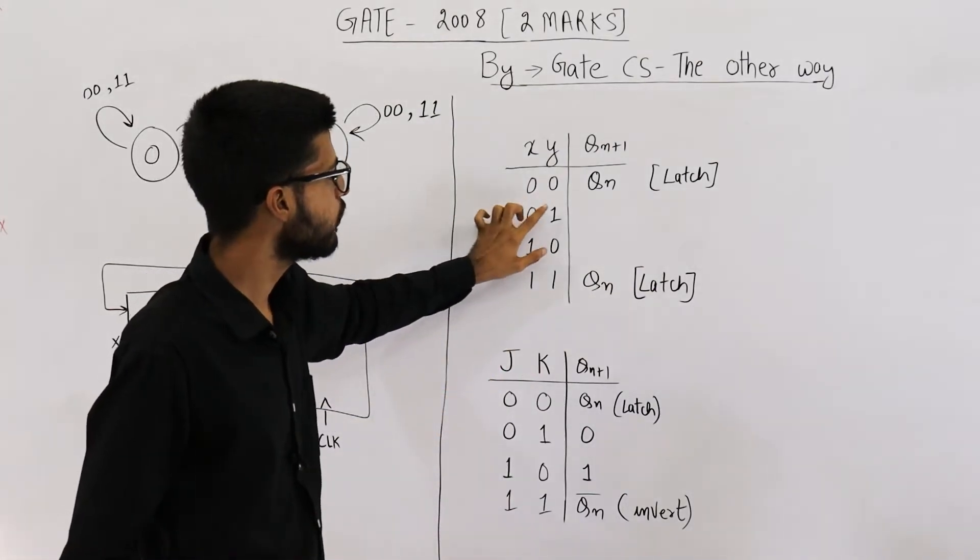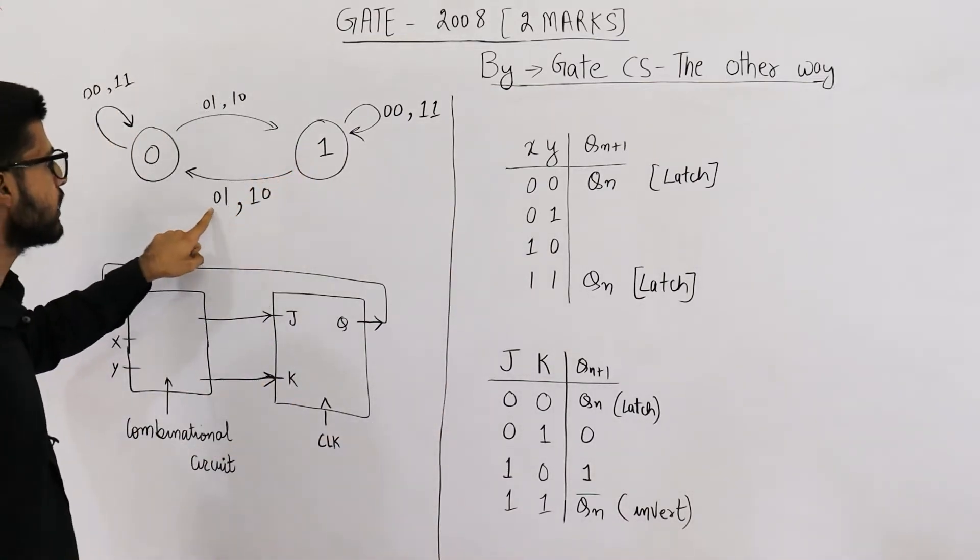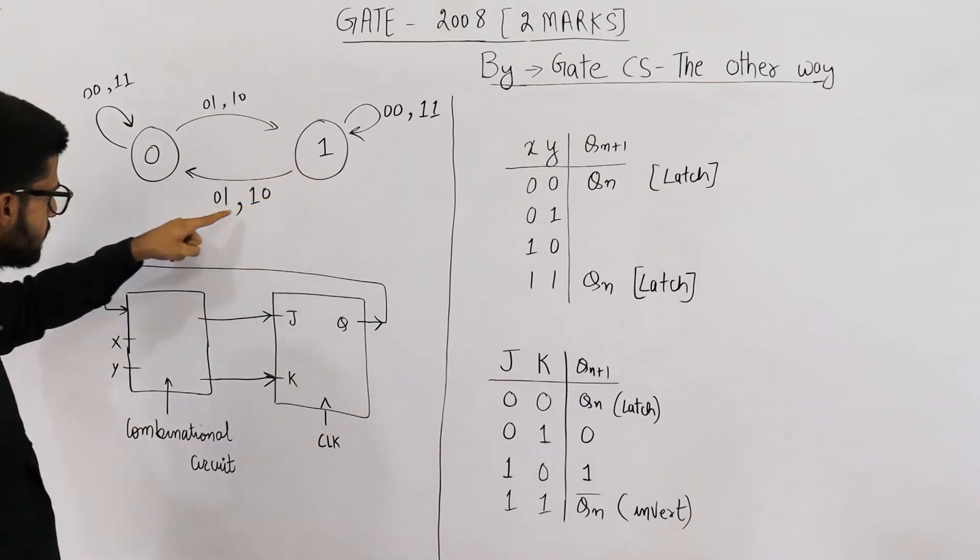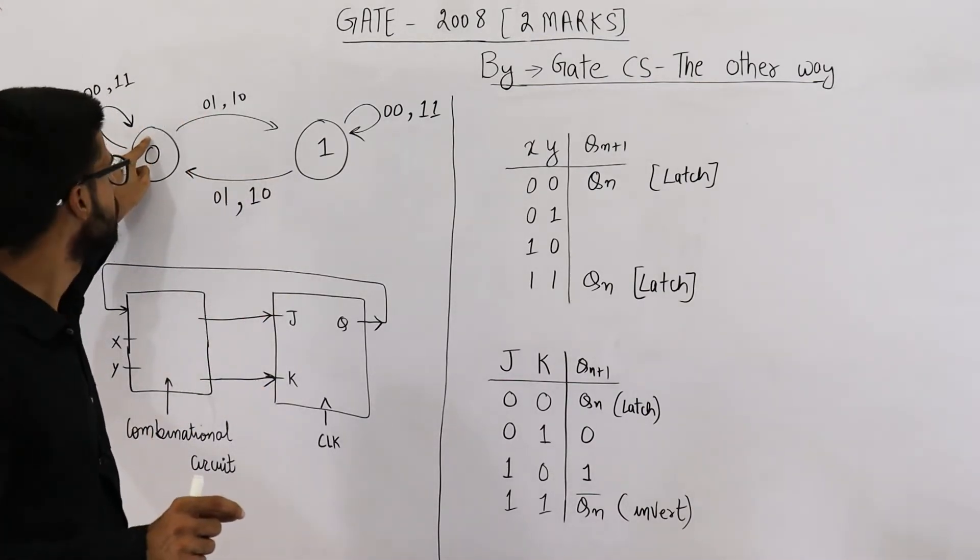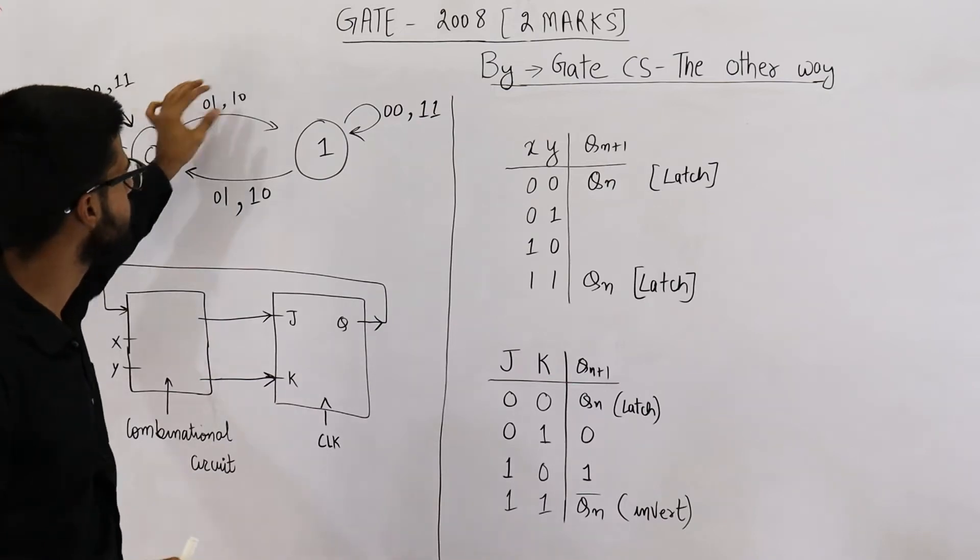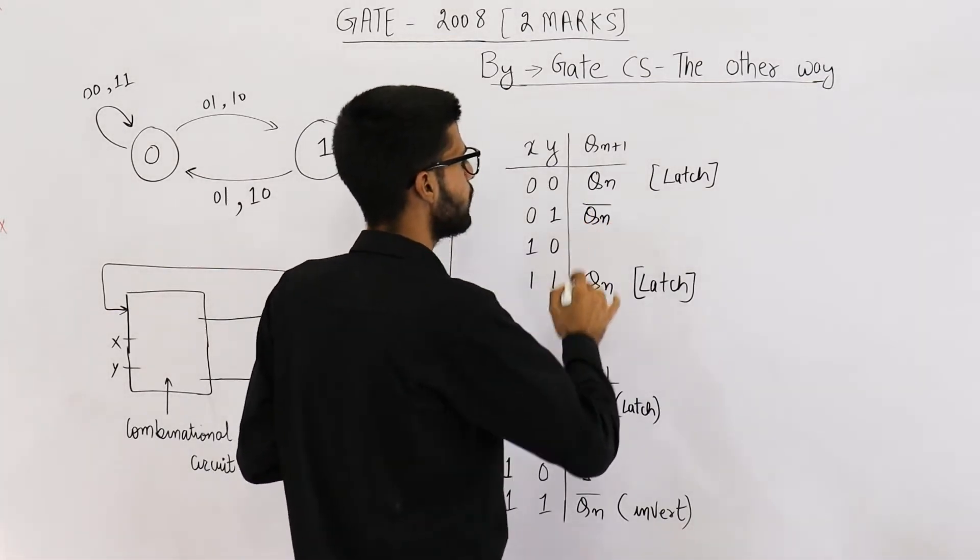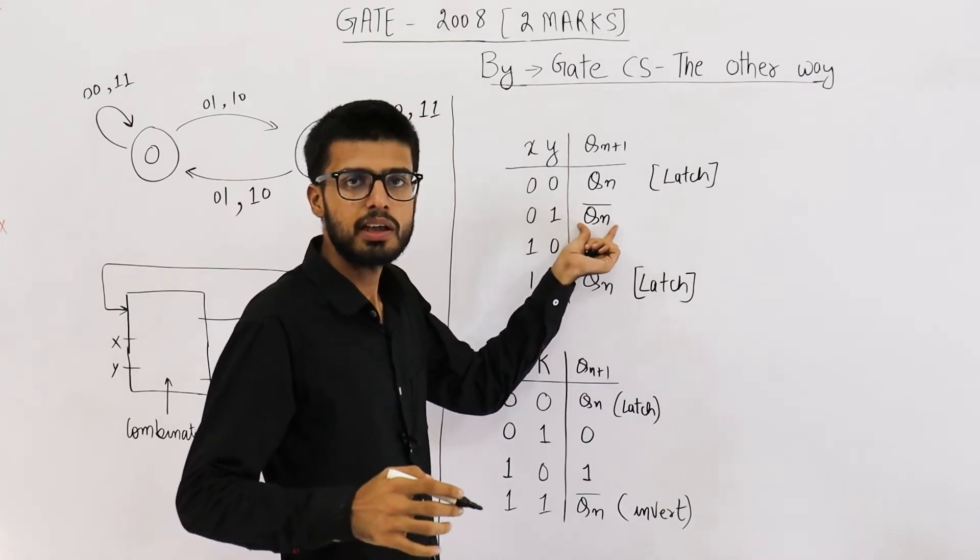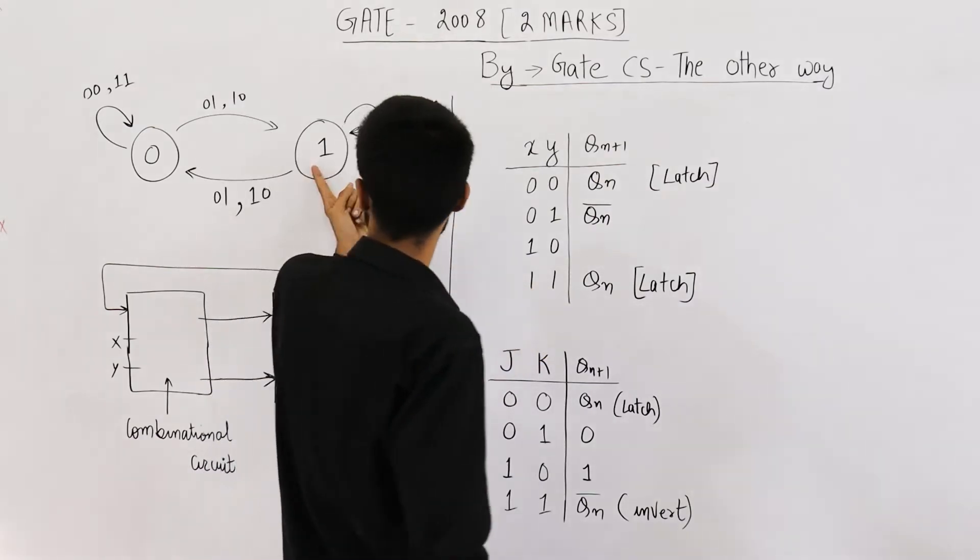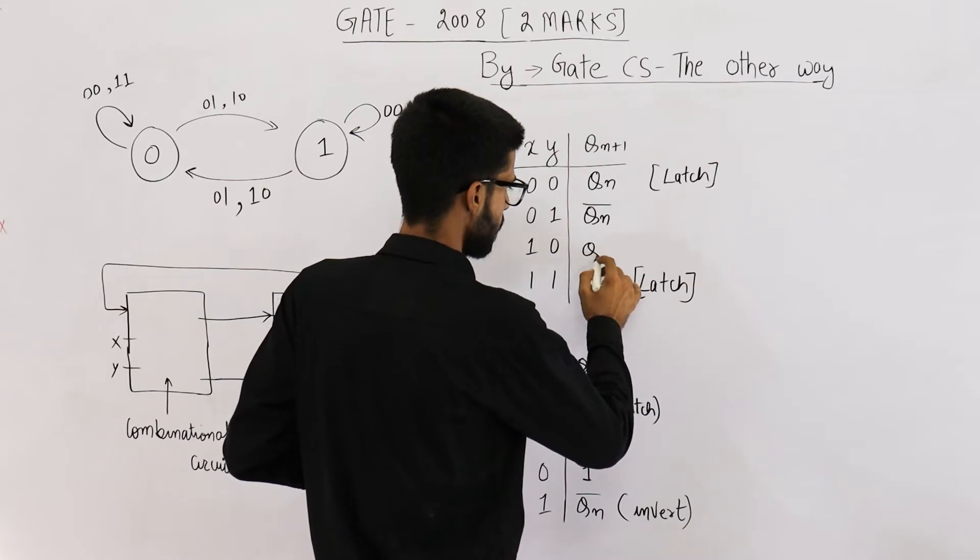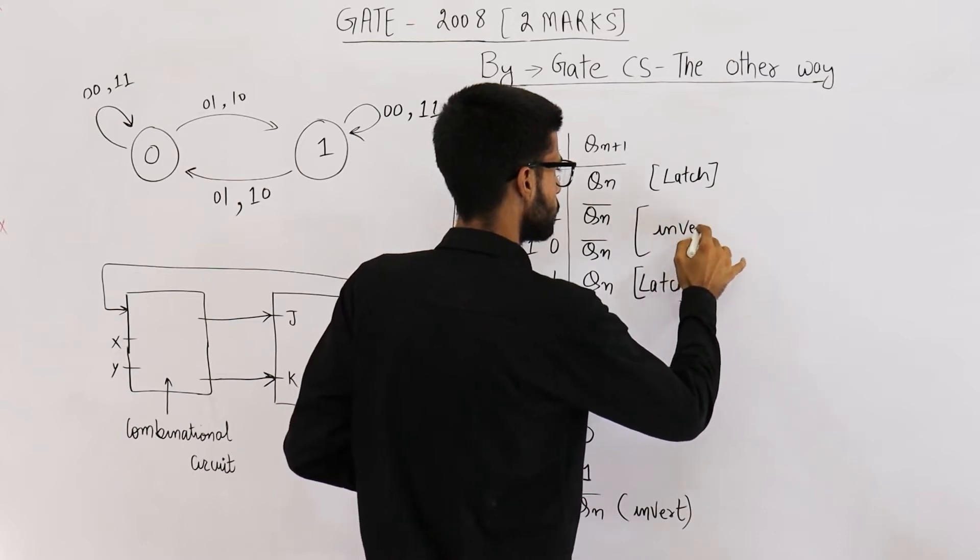Similarly, you can see 0,1 and 1,0 - both of these inputs will change the state. If you are here, you see either 0,1 or 1,0, you will change the state from 1 to 0. And if you are currently on state 0 and values of X,Y are 0,1 or 1,0, still you will change the state. That means 0,1 is Qn complement. Whatever was the current output, its complement will be the next output. If currently you are on state 1, next output will be 0. Similarly, here also it is Qn complement. So both of these, they are invert. Whatever is the current state, just take its complement.